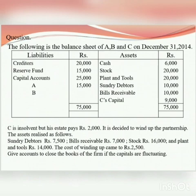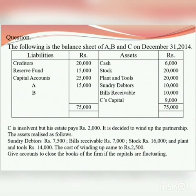The deficiency is the solvent partners' share. Because of the Garner versus Murray decision, the capital ratio is used to distribute the insolvent partner's deficiency among the solvent partners.